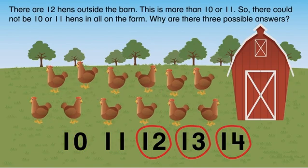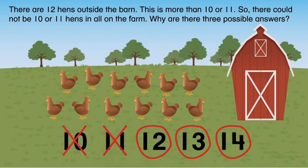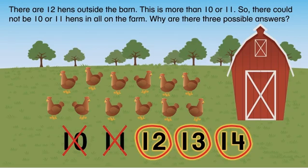Why could 10 or 11 not be possible answers? There are 12 hens outside the barn. This is more than 10 or 11. So there could not be 10 or 11 hens in all on the farm.